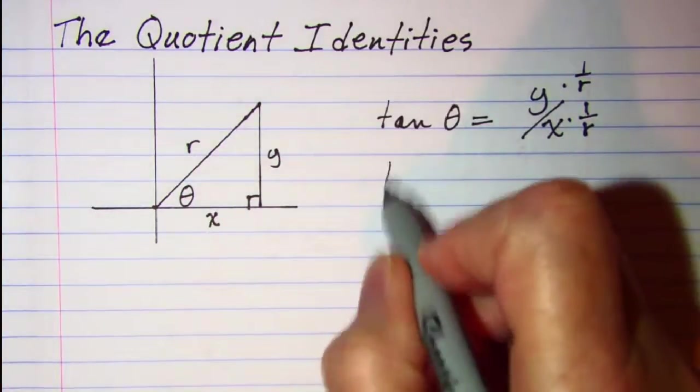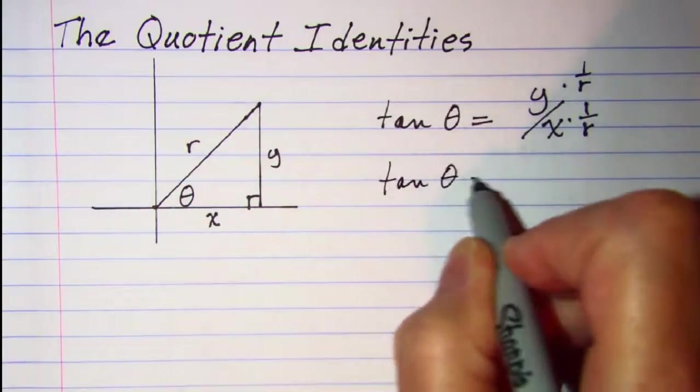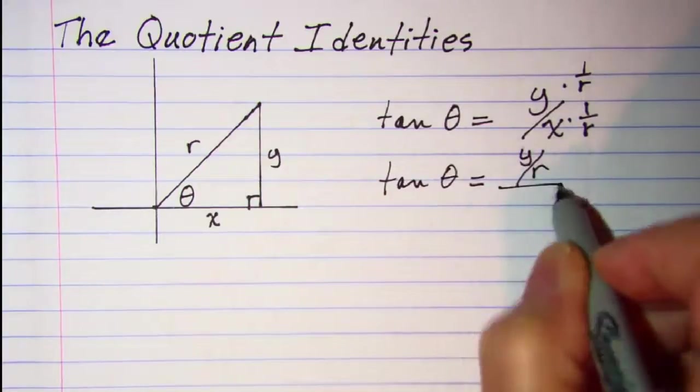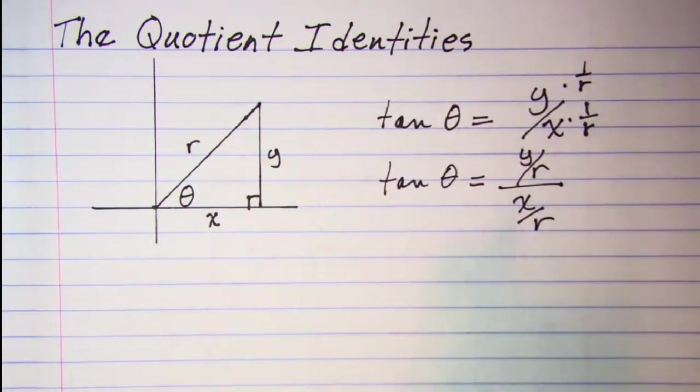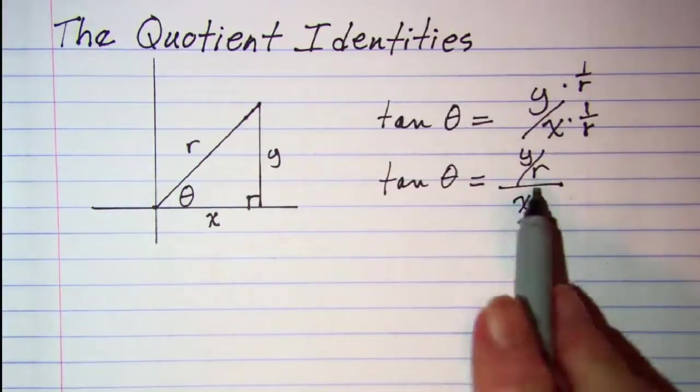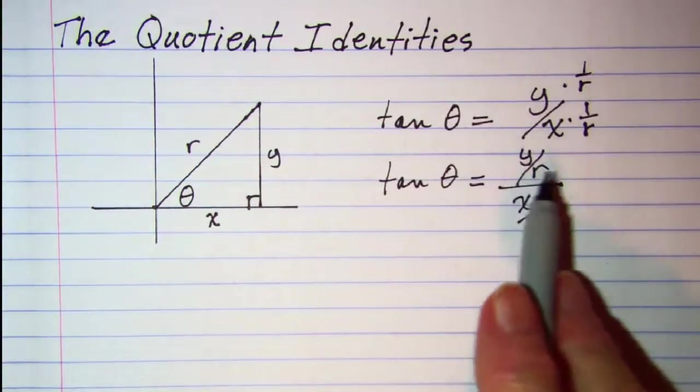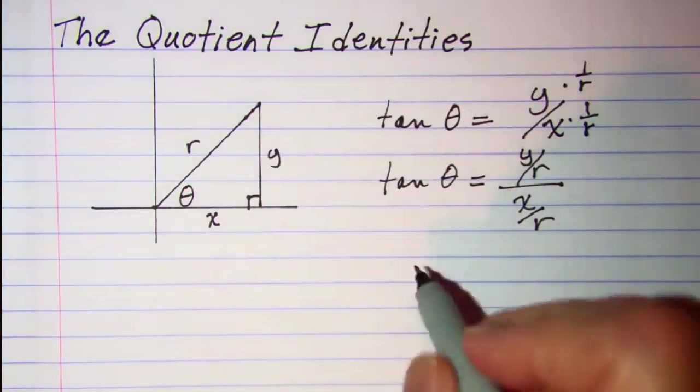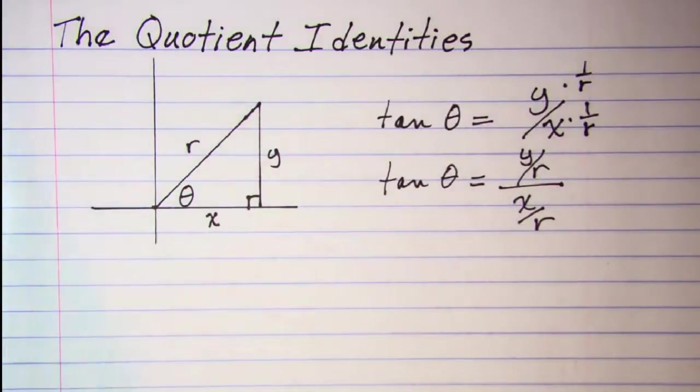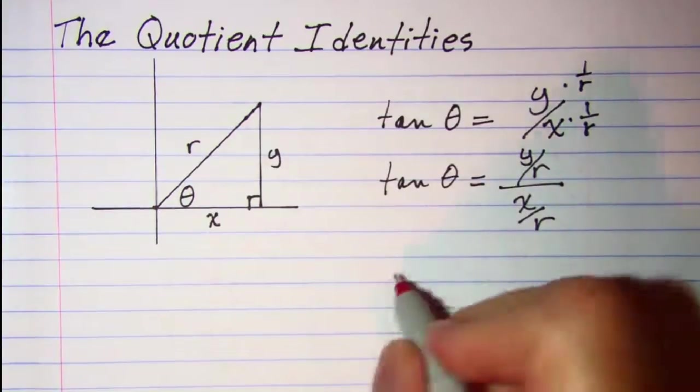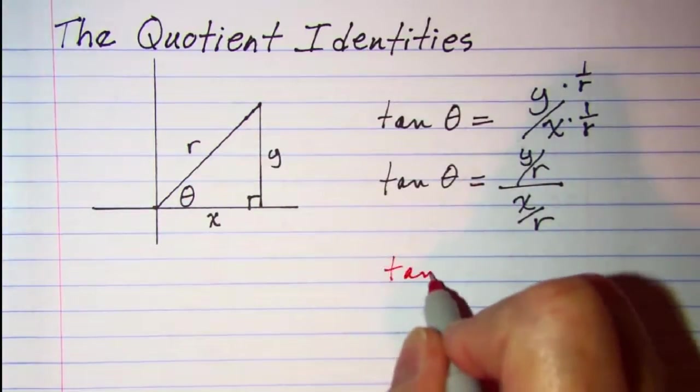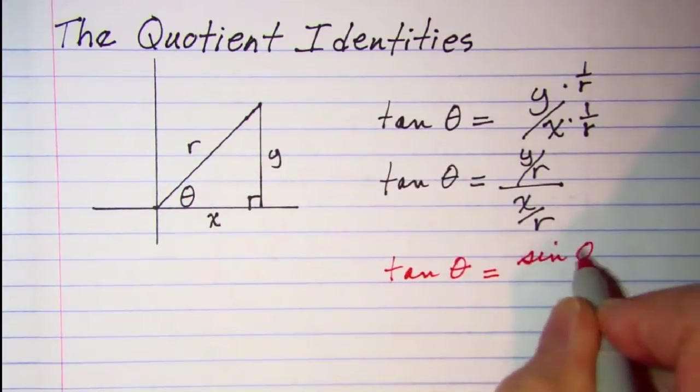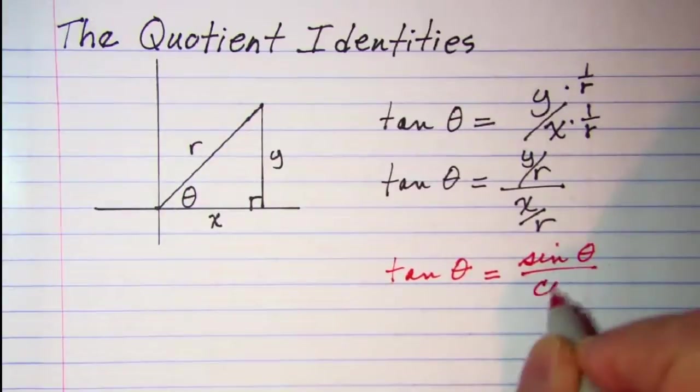So now I have tangent theta is equal to y over r divided by x over r. Well this is the definition of sine of theta and this bottom is the definition of cosine theta. So I have my first quotient identity: tangent theta is equal to sine of theta divided by the cosine of theta.